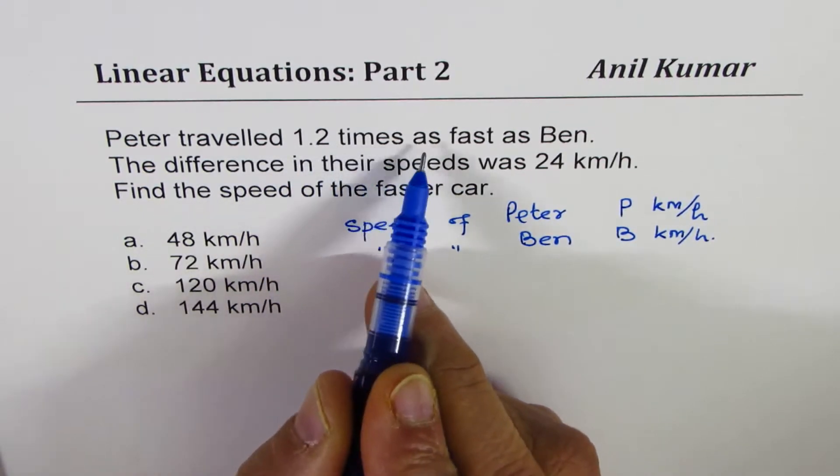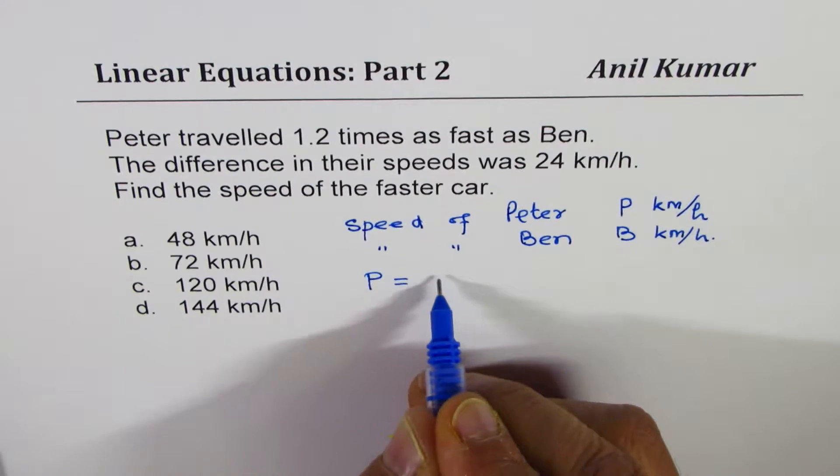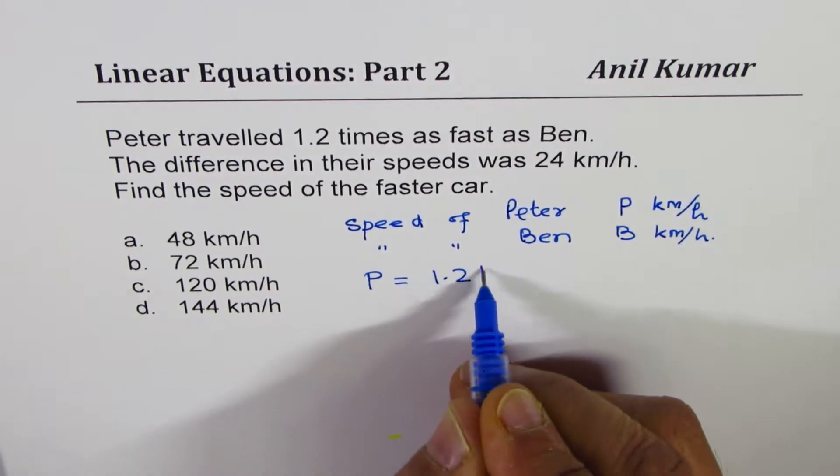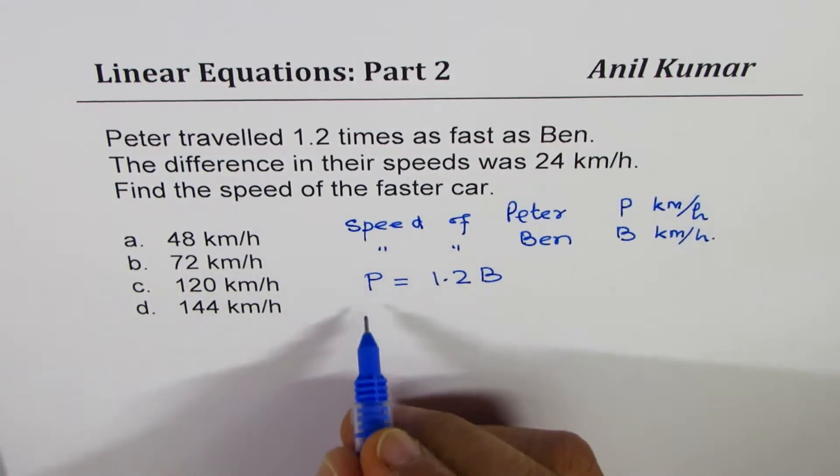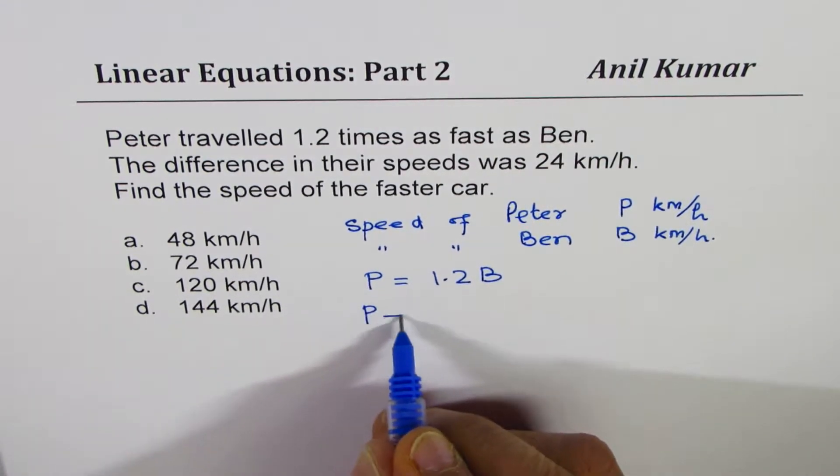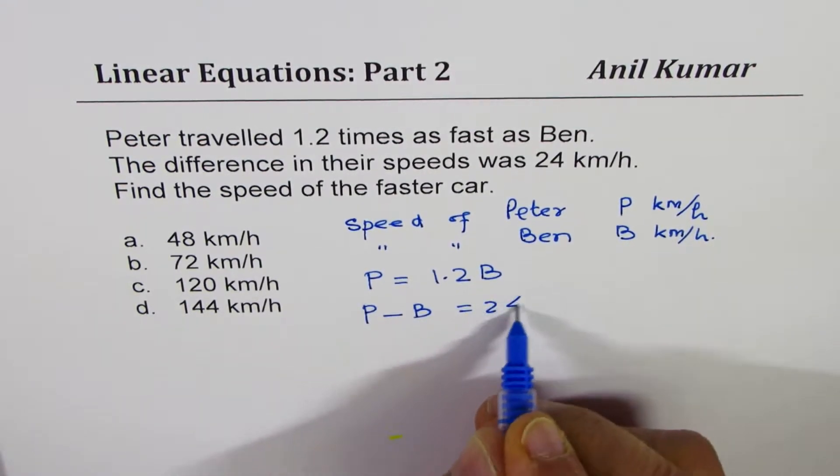Peter traveled 1.2 times as fast as Ben. That means p equals 1.2 times b. The difference in their speed is 24. So Peter speed minus Ben, Peter is faster, is 24.